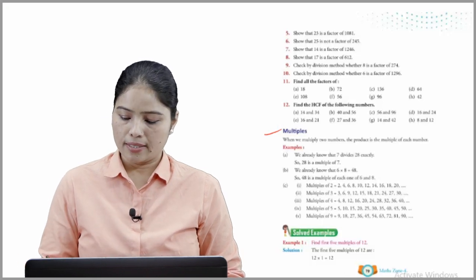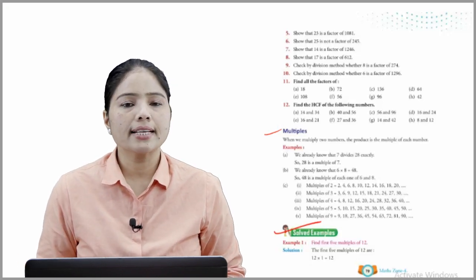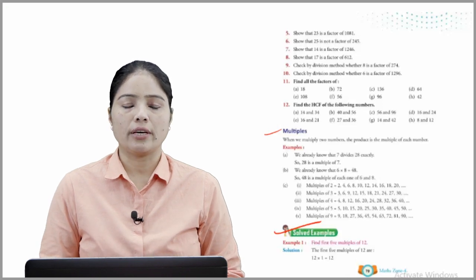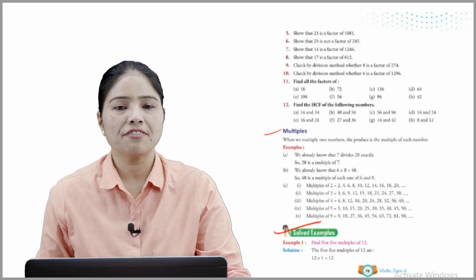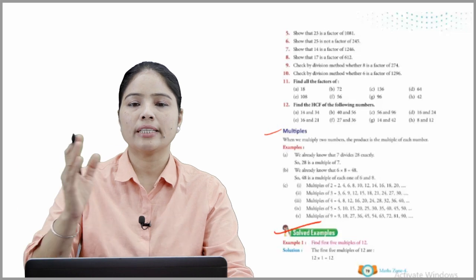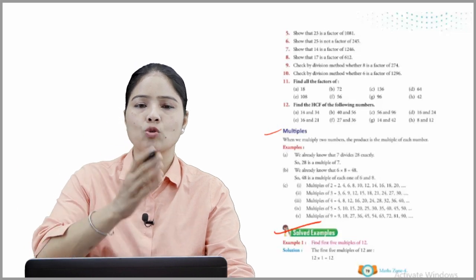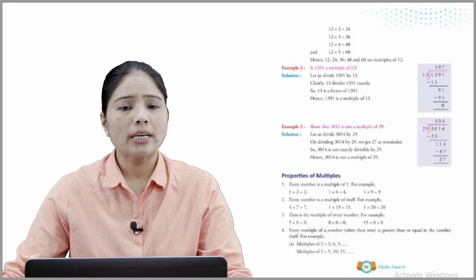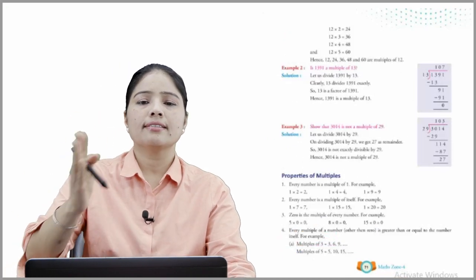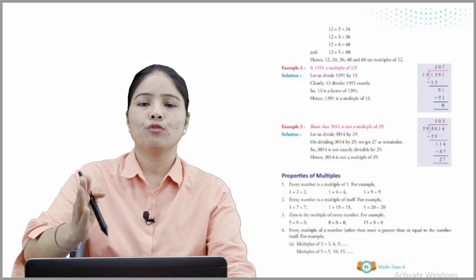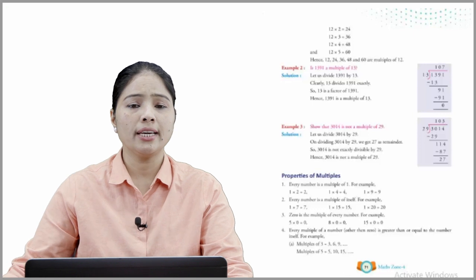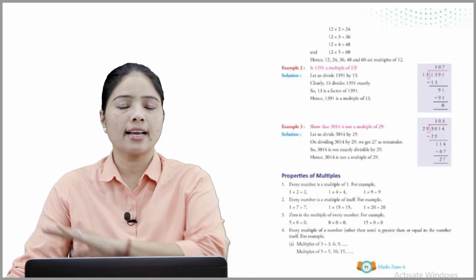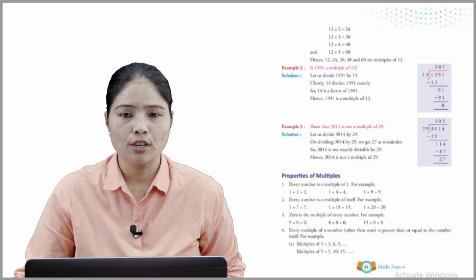Now see solved examples. Example 1: Find the first 5 multiples of 12. Solution: The first 5 multiples of 12 are — 12×1=12, 12×2=24, 12×3=36, 12×4=48, 12×5=60. Hence 12, 24, 36, 48, and 60 are the multiples of 12.